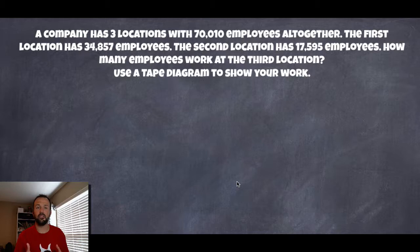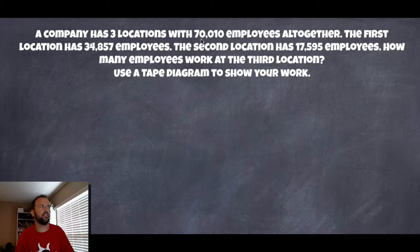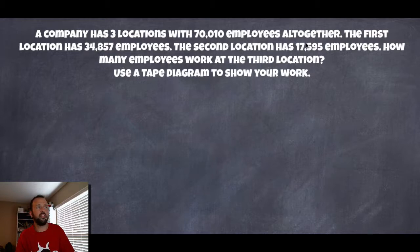I'm going to encourage you guys to read it out loud to yourself, or to your learning guide, or to somebody who's in the house with you. Read it out loud, and then we'll read it again together. It says: a company has three locations with 70,010 employees altogether. The first location has 34,857 employees, and the second location has 17,595 employees. How many employees work at the third location?